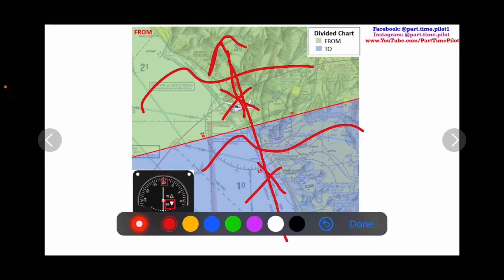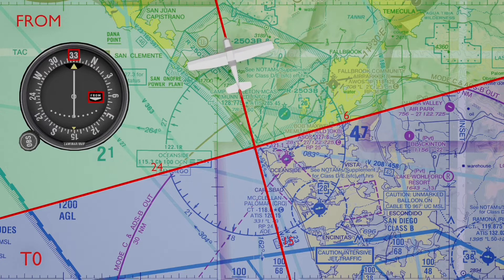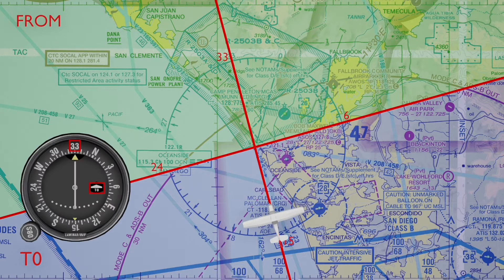Let's see this TO/FROM concept in action in an animation. Here we are on the 330 radial of Oceanside VOR, on the 330 side. With 330 dialed in and on the 330 side, our needle is centered and we have a FROM indication. If our aircraft was on the opposite side — 330 minus 180, which is the 150 side — our needle is still centered when we have 330 dialed in, but we get a TO indication because we're on the opposite side.